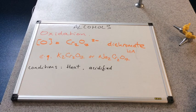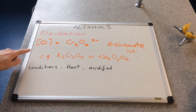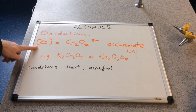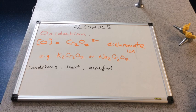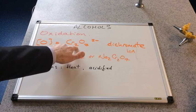This video is about the oxidation reactions of alcohols. We'll start by establishing what this symbol here means. This O in square brackets stands for the oxidizing agent. The oxidizing agent that's going to oxidize our alcohols is the dichromate ion.